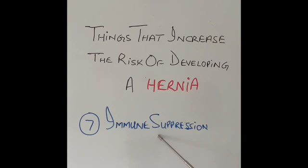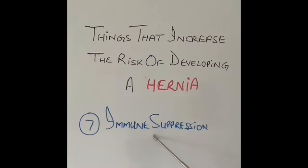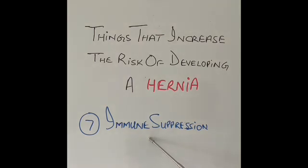Immune suppression increases the risk of developing a hernia. Whether immune suppression is because of disease — like rheumatoid arthritis, diabetes, or cancer — or because of medications like chemotherapy, steroids, or other medications that suppress immunity, the risk of developing a hernia increases. This happens because muscle wasting takes place due to immune suppression, and the risk of chest infections and wound infections is higher, both of which increase the risk of post-operative hernias.